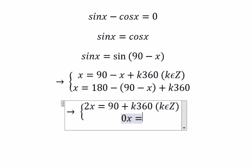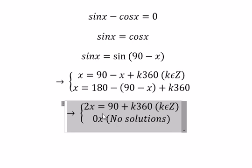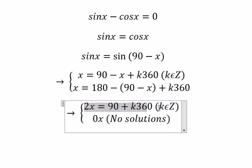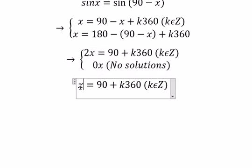In this situation, there is no solution for the second equation, so we just have the first one left. We got the final answer by dividing both sides by 2, and you get 45 plus 180k.